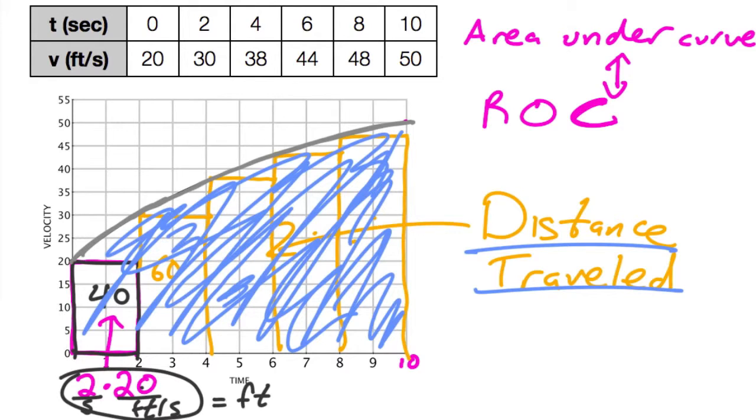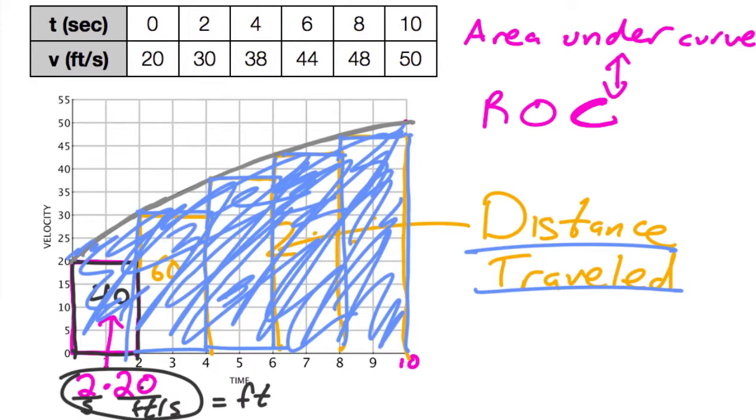So this might not seem that important, but it's relating two things that seemingly have nothing to do with one another. I mean, if I told you the area underneath the curve is equal to the distance traveled, you would probably say, why, right? But it makes sense when you're thinking about it in terms of these rectangles. Okay, so we're going to use that idea when we're explaining the fundamental theorem of calculus.